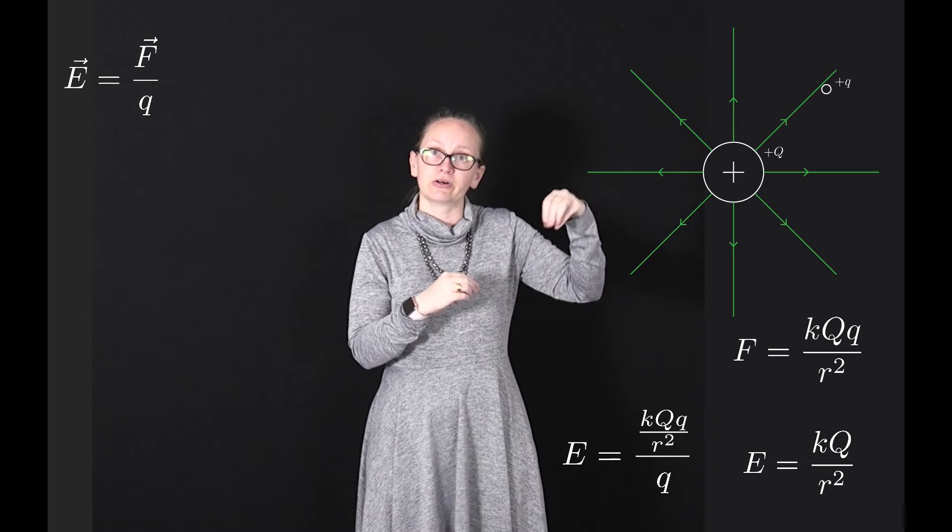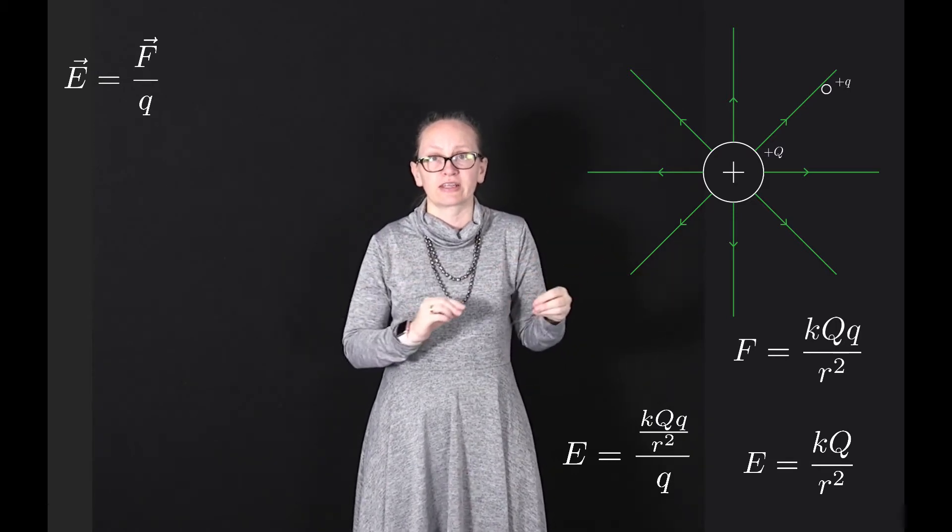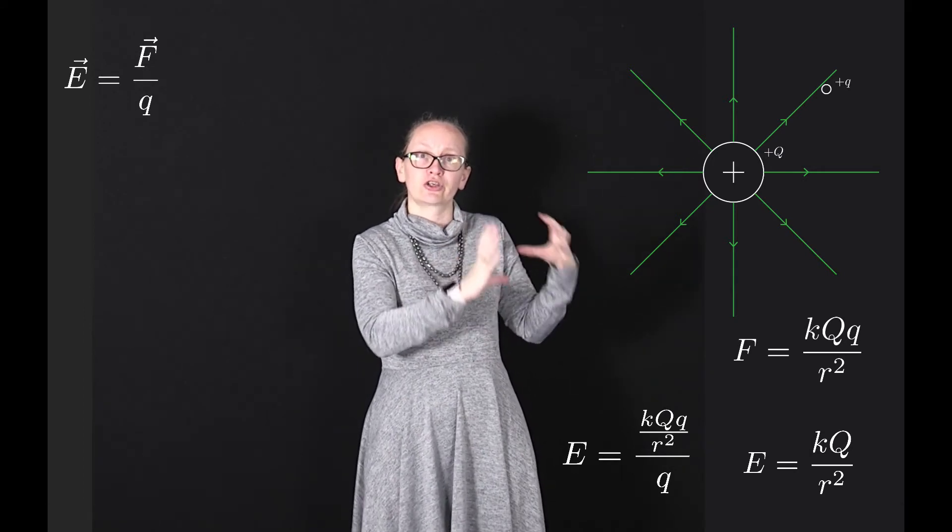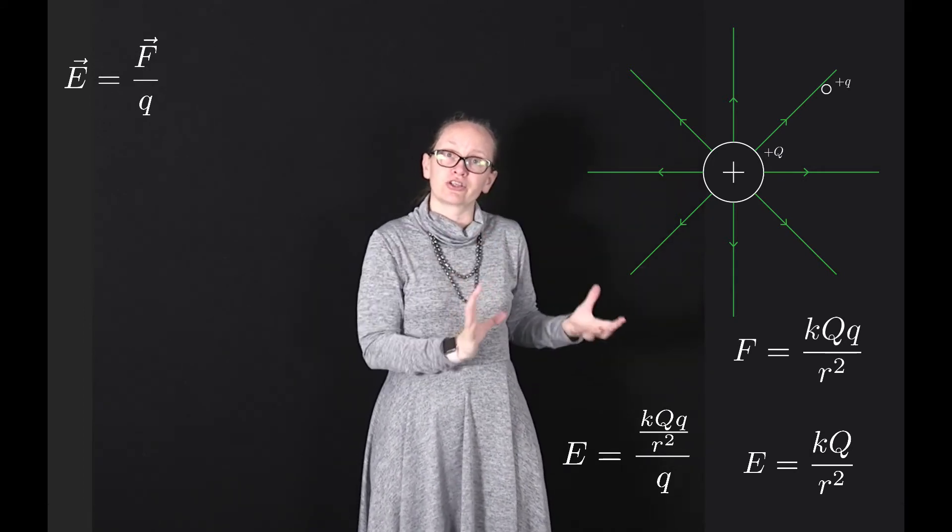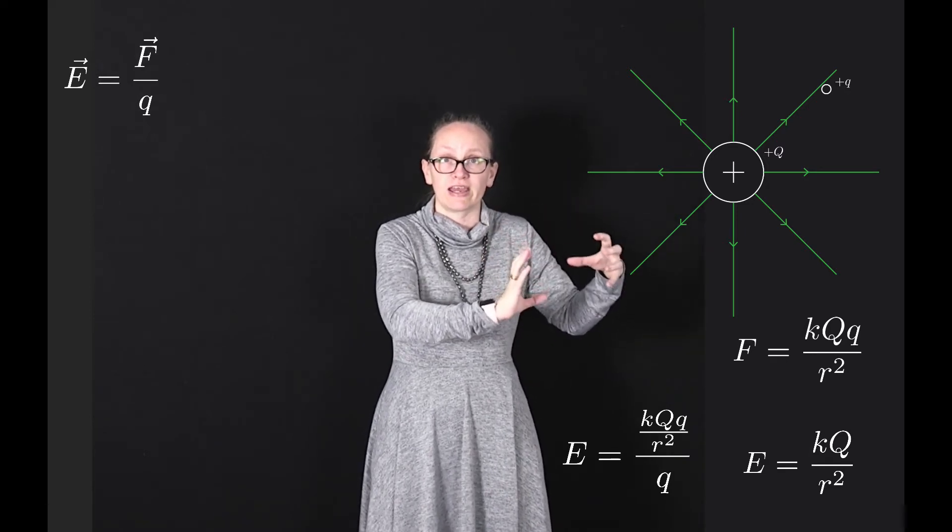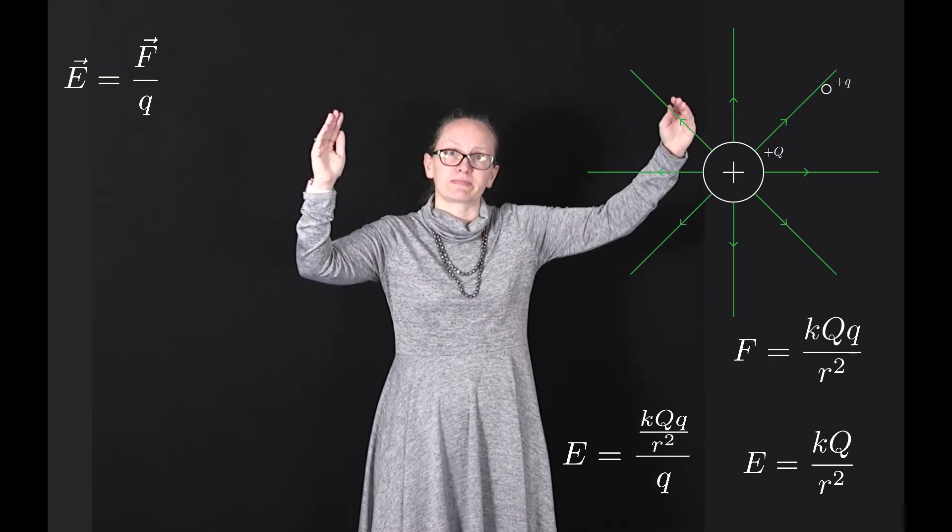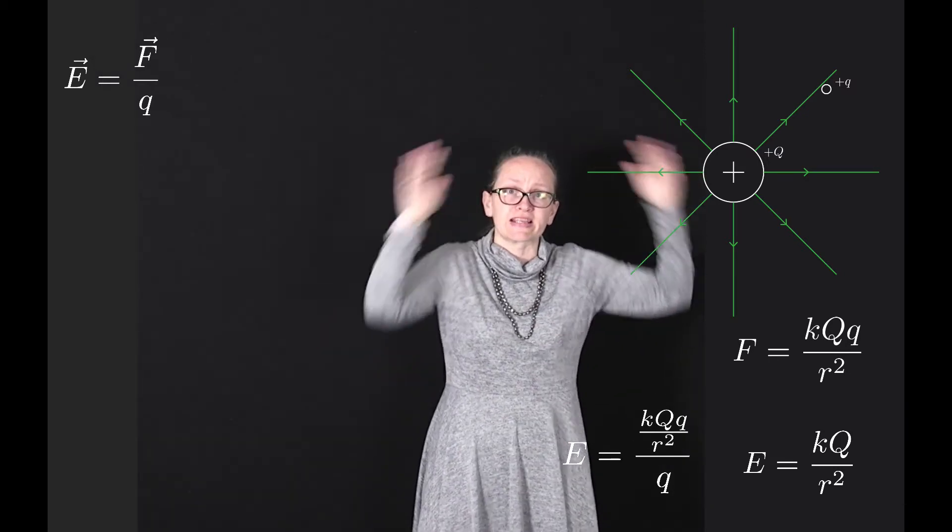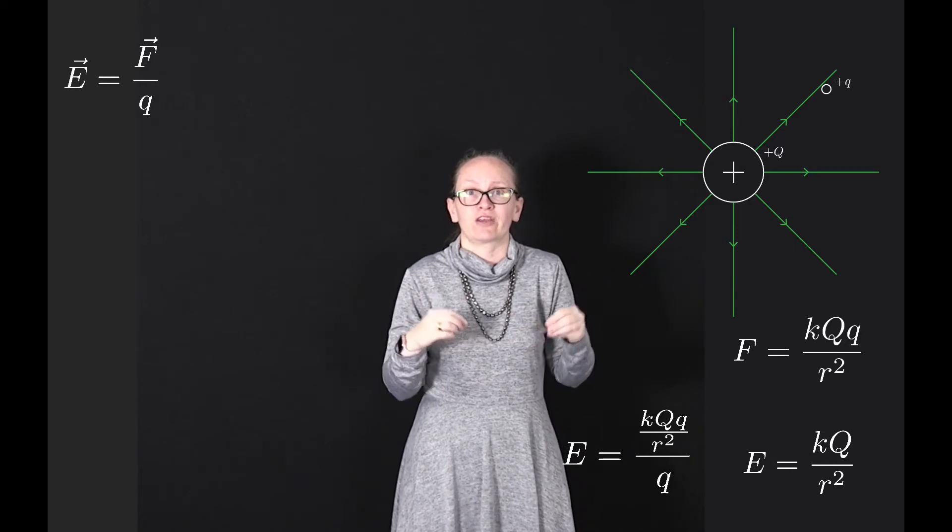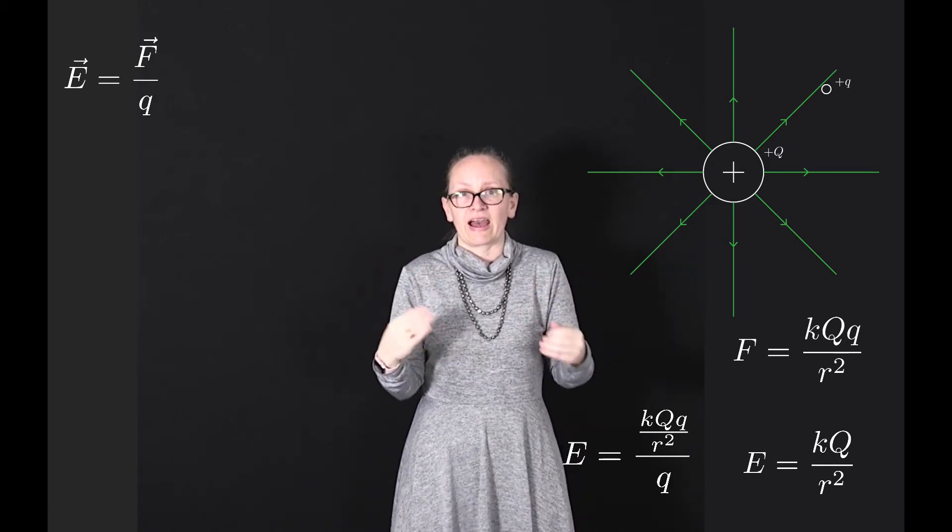When we plot out electric field lines, the direction of the lines shows the direction of the force on a positive particle and the density of the lines shows how strong the electric field is. Close to our point charge Q the lines are much closer together, indicating a much stronger electric field. When we move away, the lines are more spaced out with lower density, indicating that our electric field is a lot weaker.